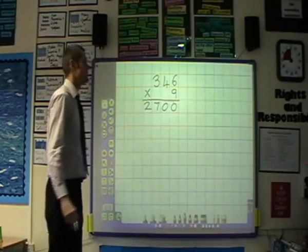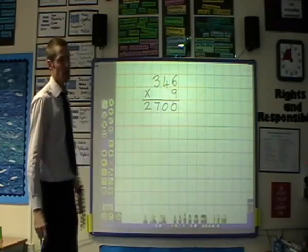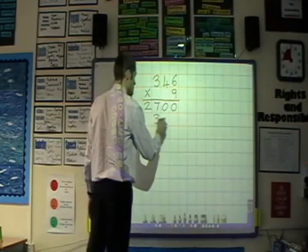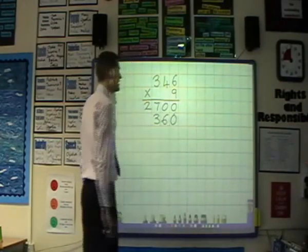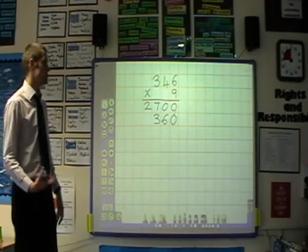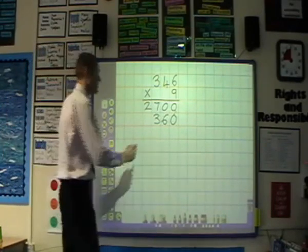We would then multiply 40 by 9, and 9 fours are 36, so that would be 360 or 36 tens. And finally, we would multiply the units, that would be 6 times 9 which is 54.